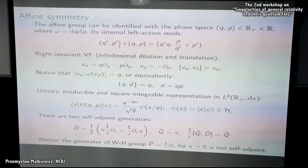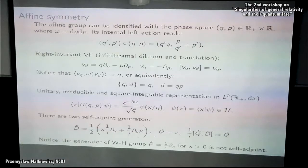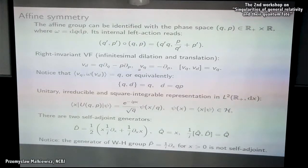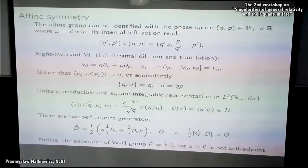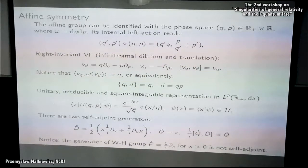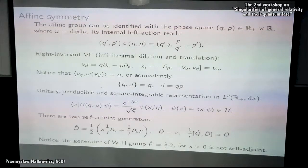The left action of the affine group on itself is defined in a standard way. The infinitesimal generators of this action are called dilation and translation — but this is translation in P, since translation in P can be kept. They satisfy a specific Lie bracket. The canonical generators of these vector fields are observables: Q (position) and D (dilation), and they satisfy an algebra which is, of course, homomorphic to the Lie brackets by virtue of the Jacobi identity.